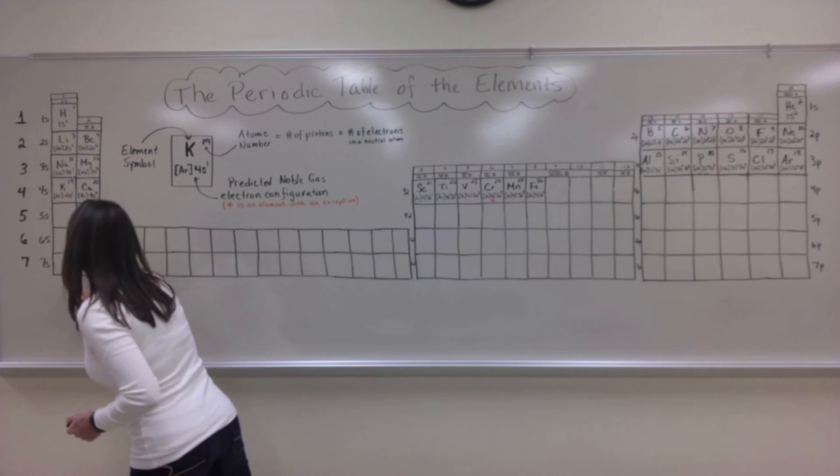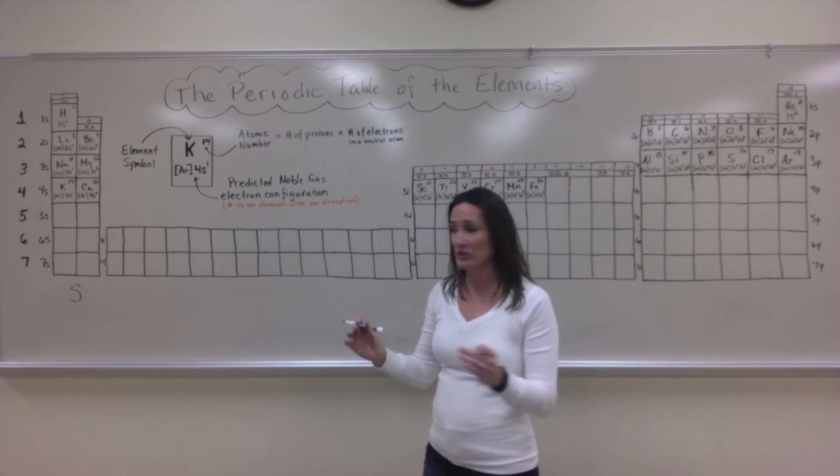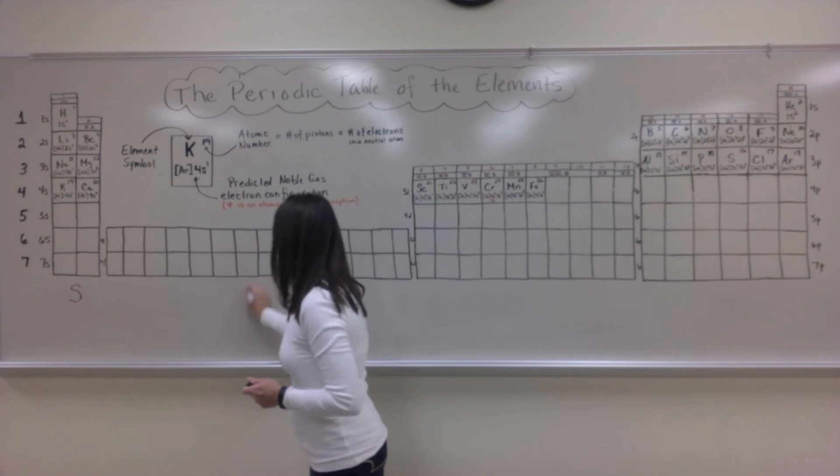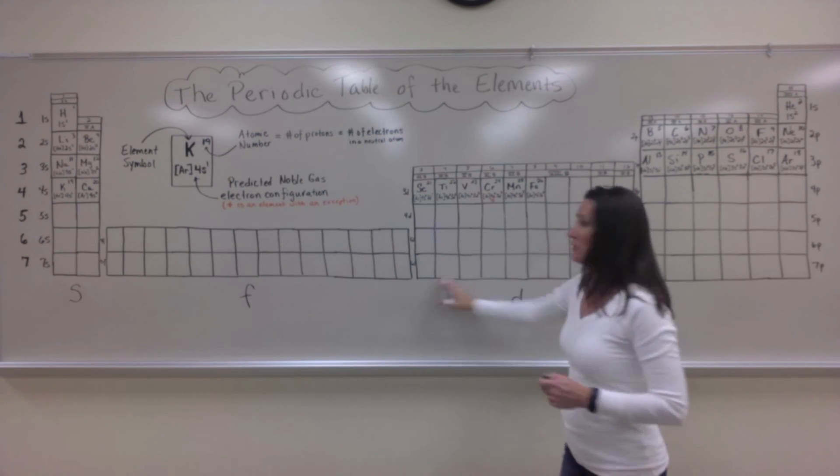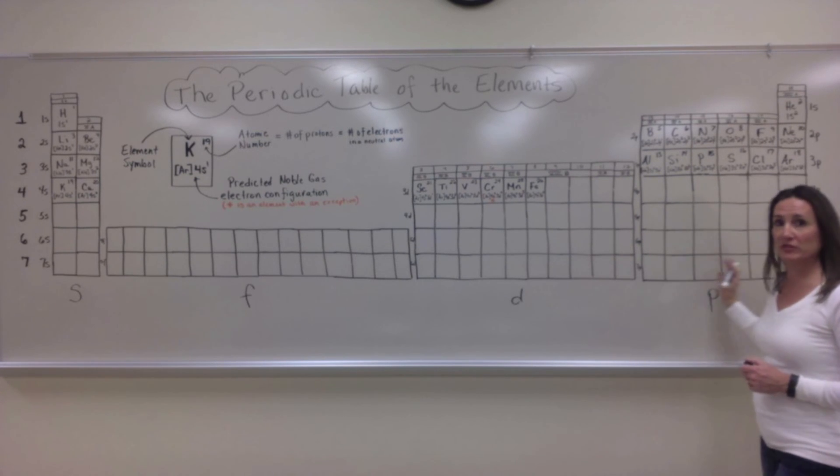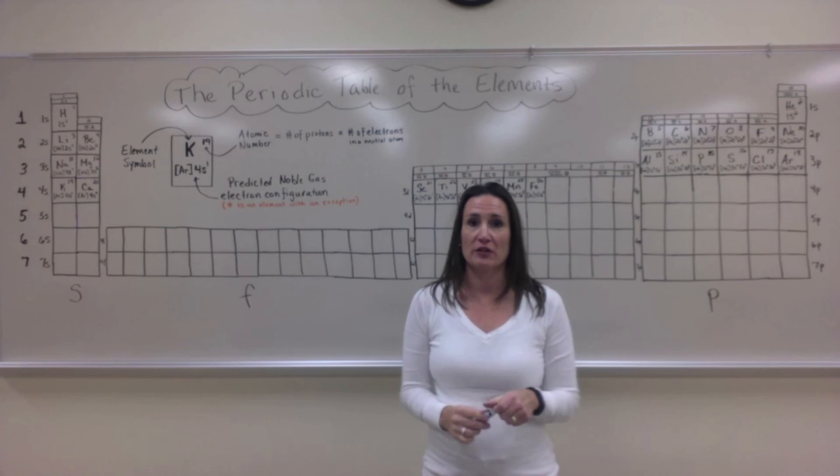You should also see that the section over here is all s electrons which hold 2 electrons total, 2 columns. These will be your f, 14, these will be your d, a total of 10, and these will be your p, a total of 6. Once you've seen that pattern, you should be able to predict the electron configuration of any element on the periodic table.